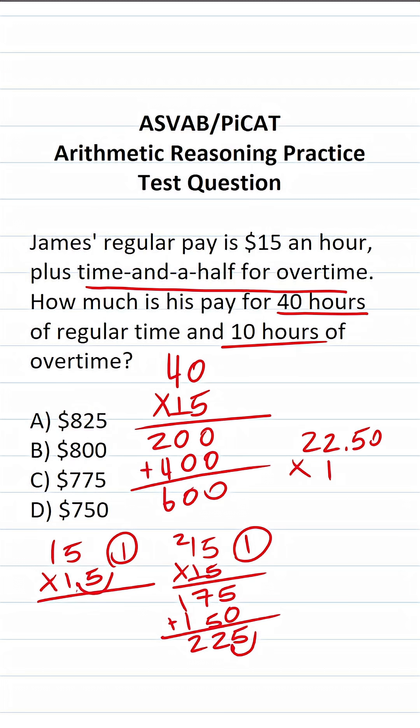And he worked 10 hours of overtime. So to find out how much he made in overtime, we're going to do 22.50 times 10. In this case, we want to shift the decimal. We can disregard this 0, but we want to shift this decimal one place to the right to make this 225 times 10 with no decimal, albeit with one decimal to move back into our answer when we're done.